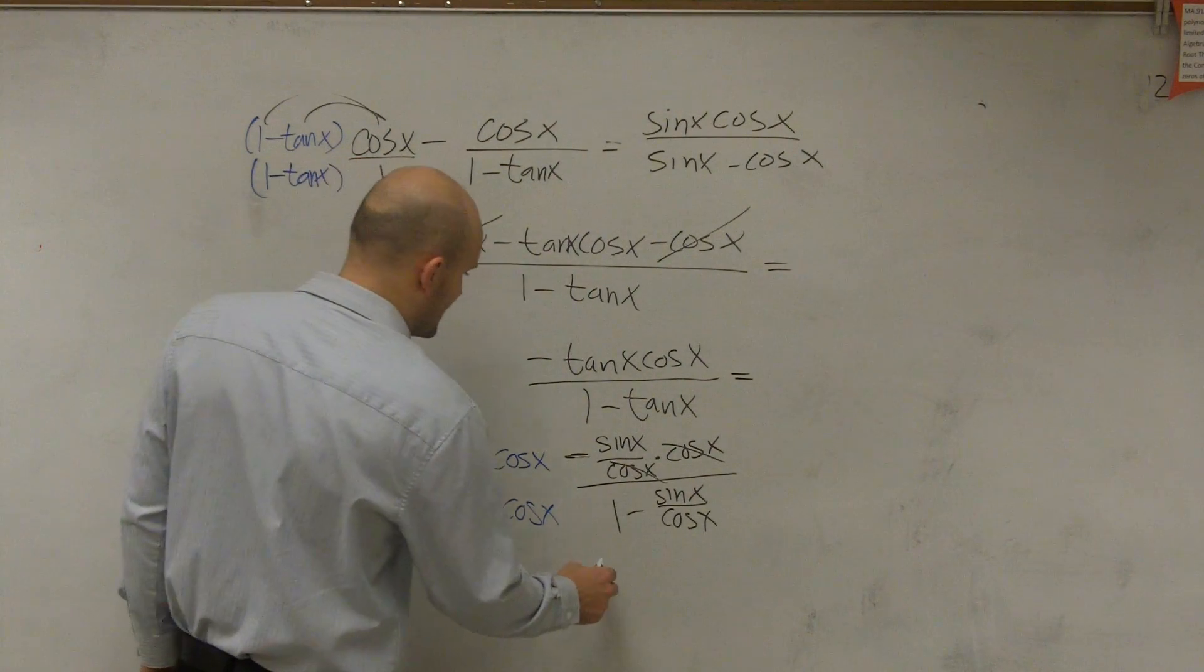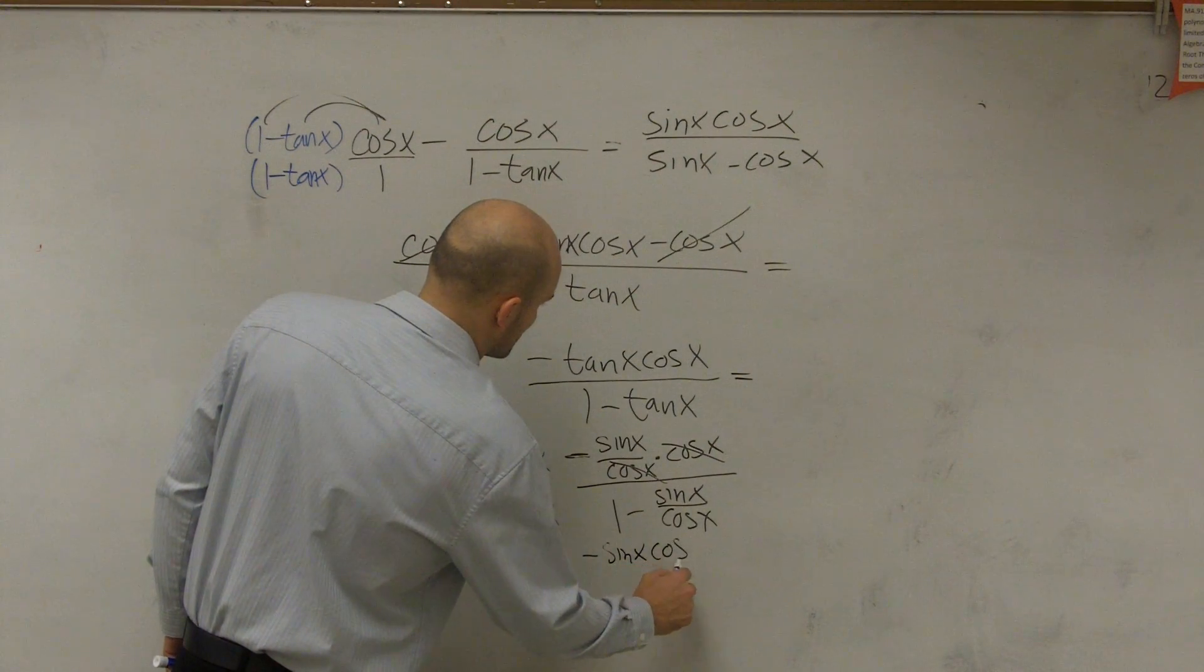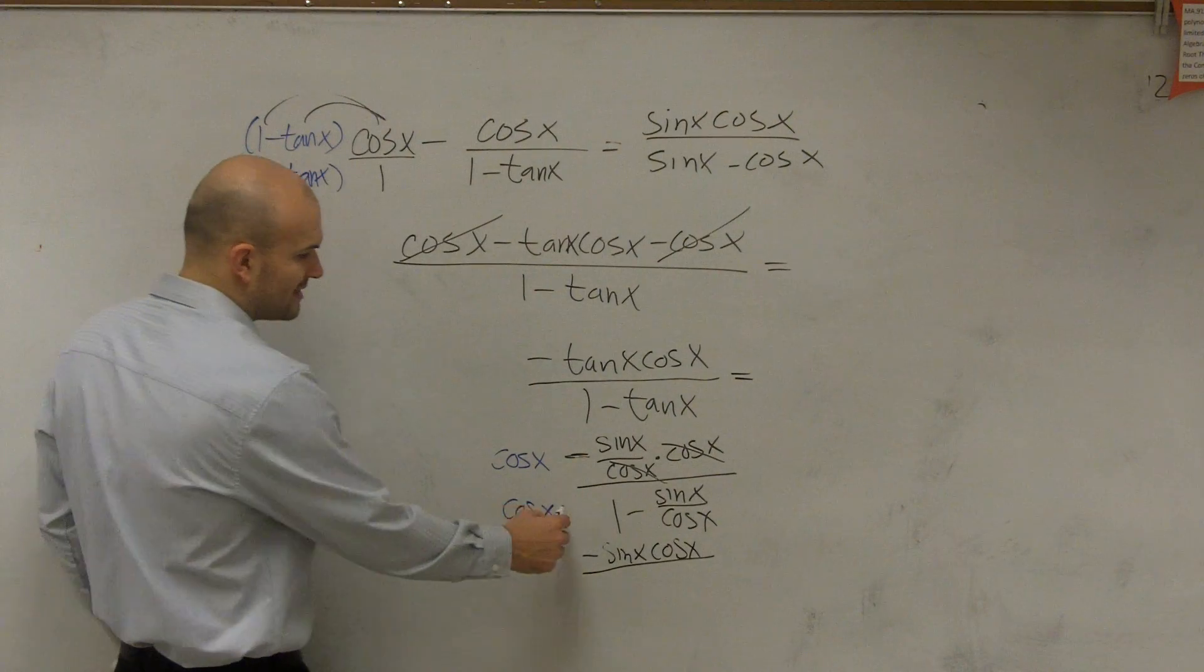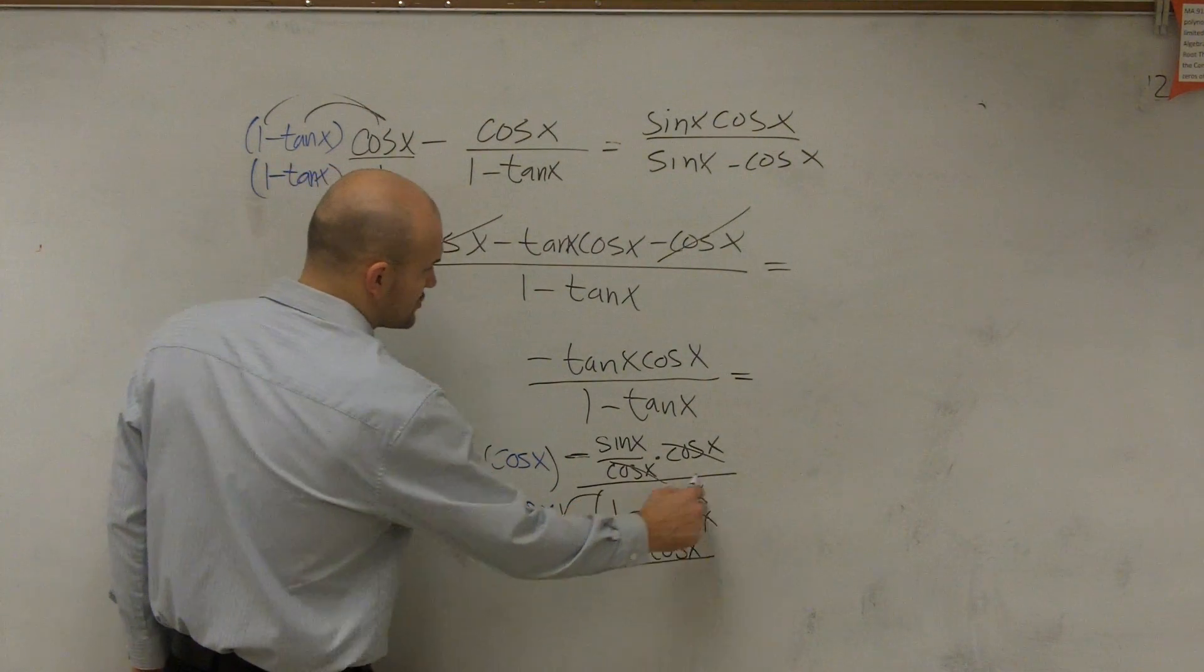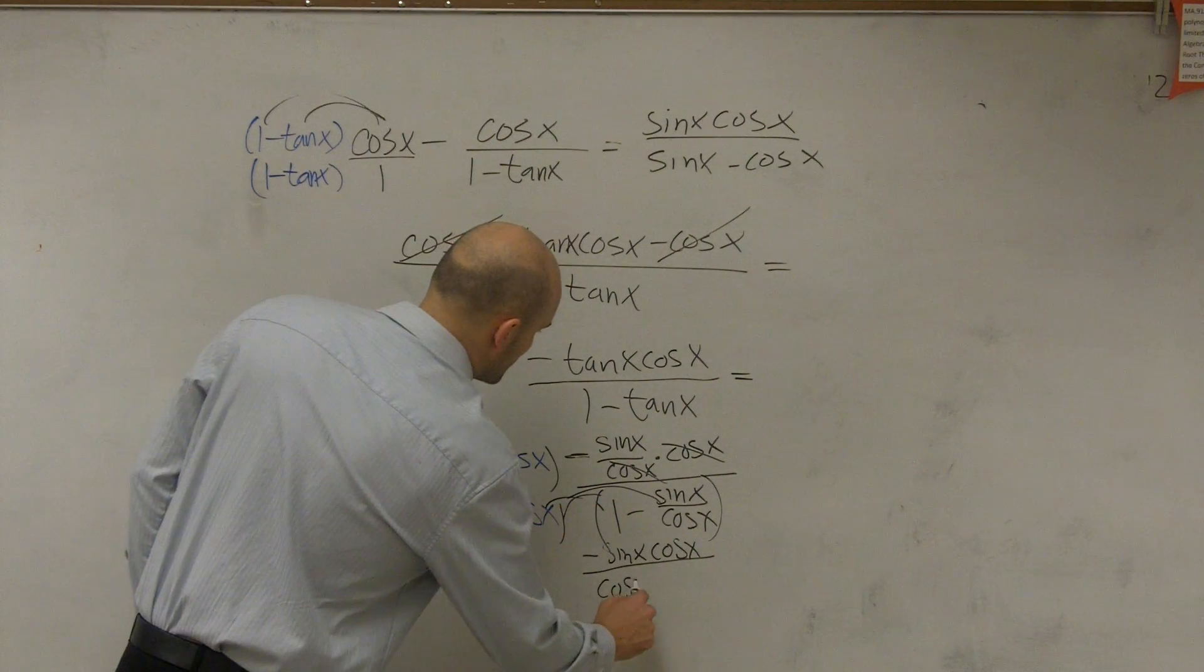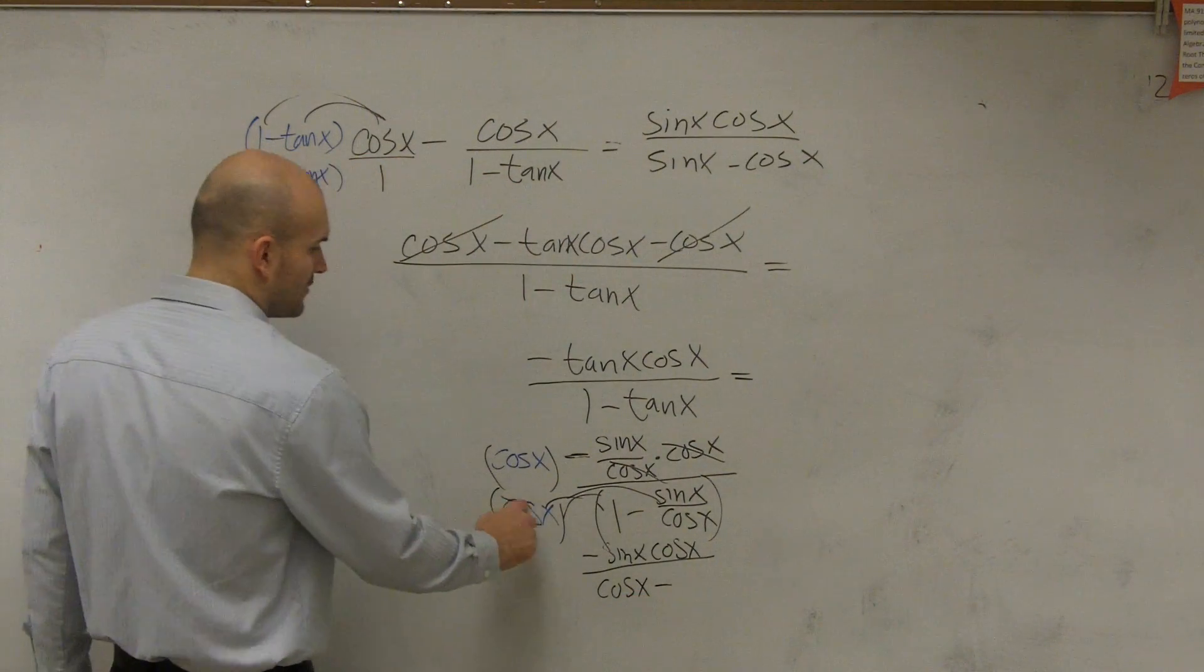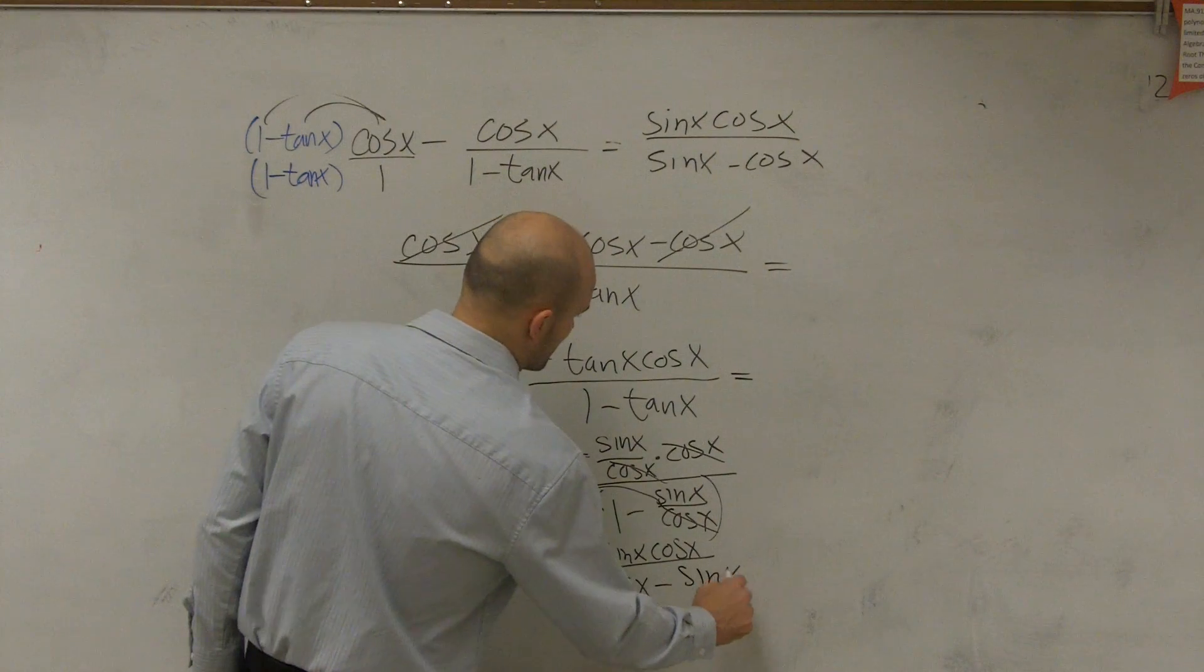So let's multiply by cosine over cosine. What happens now is I get a negative sine of x cosine of x divided by, when I apply this cosine to the top, I distribute the property, and I'm left with cosine of x minus, now these cosines are going to divide out to 1, minus sine of x.